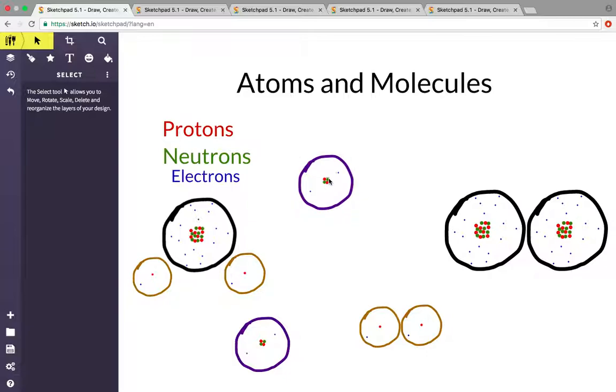So protons define the atom. Neutrons, on the other hand, can be changed. Neutrons are kind of like your brothers and sisters. If you changed your brothers and sisters, like how many you have, you would probably end up with a different family. In some cases your family would be more stable. In some cases, that's kind of mean, but it's true sometimes. And in some cases your family would be less stable. But it wouldn't change you as much as a person.